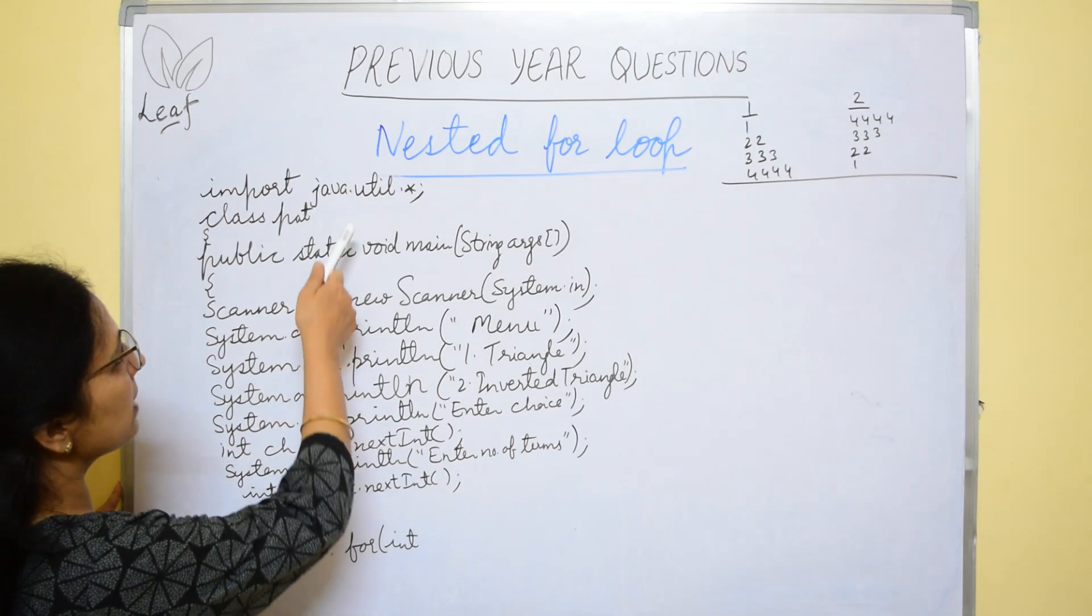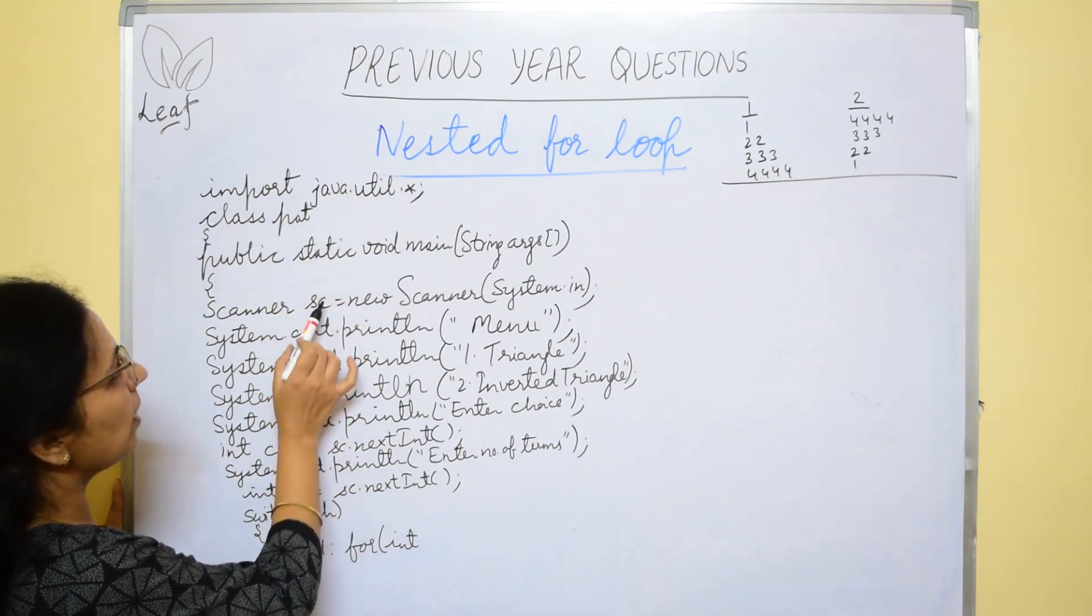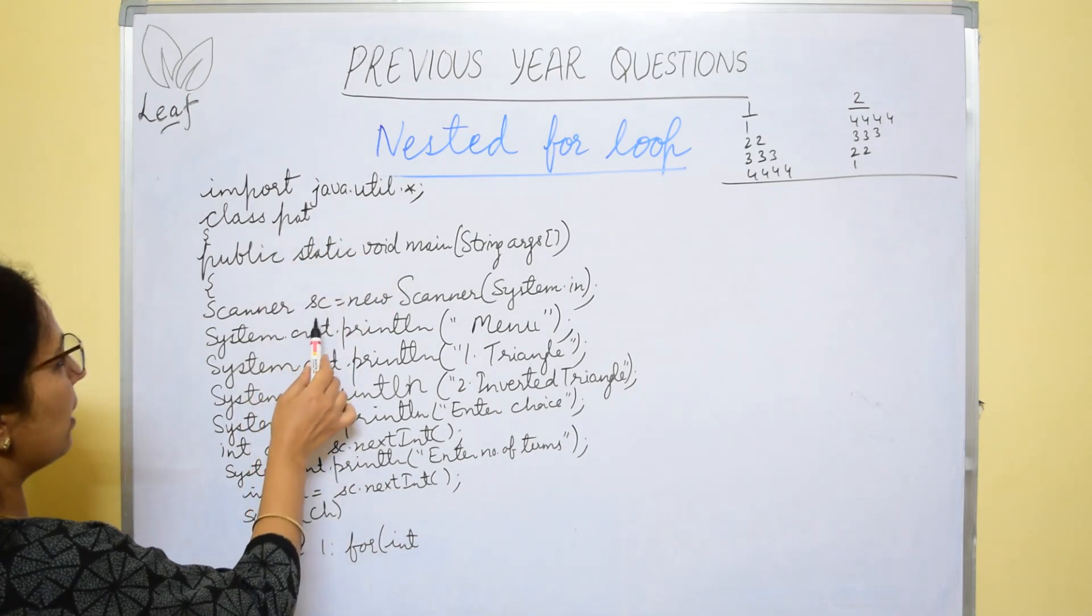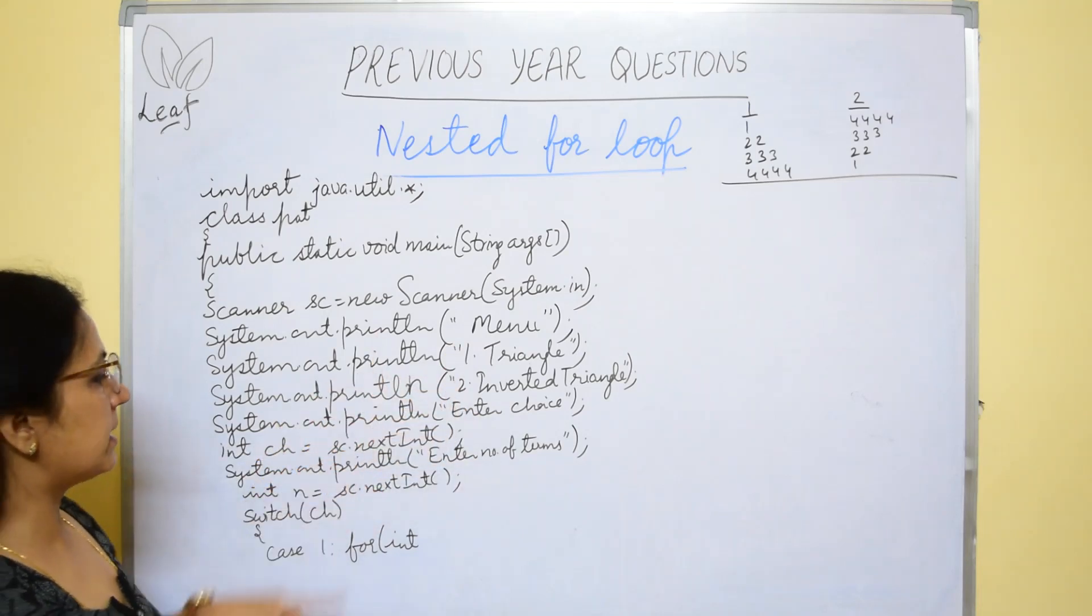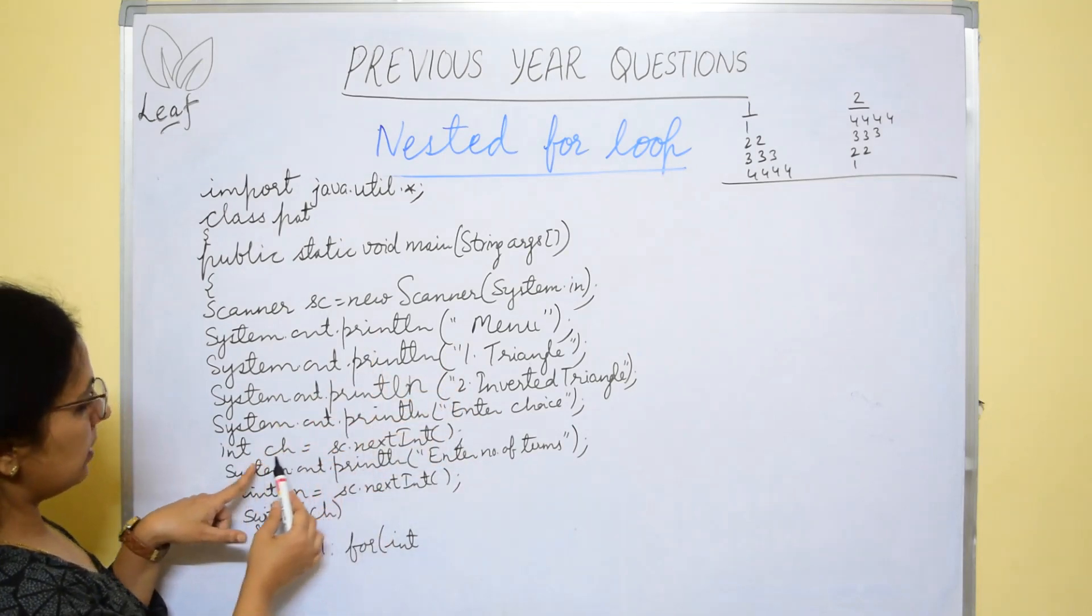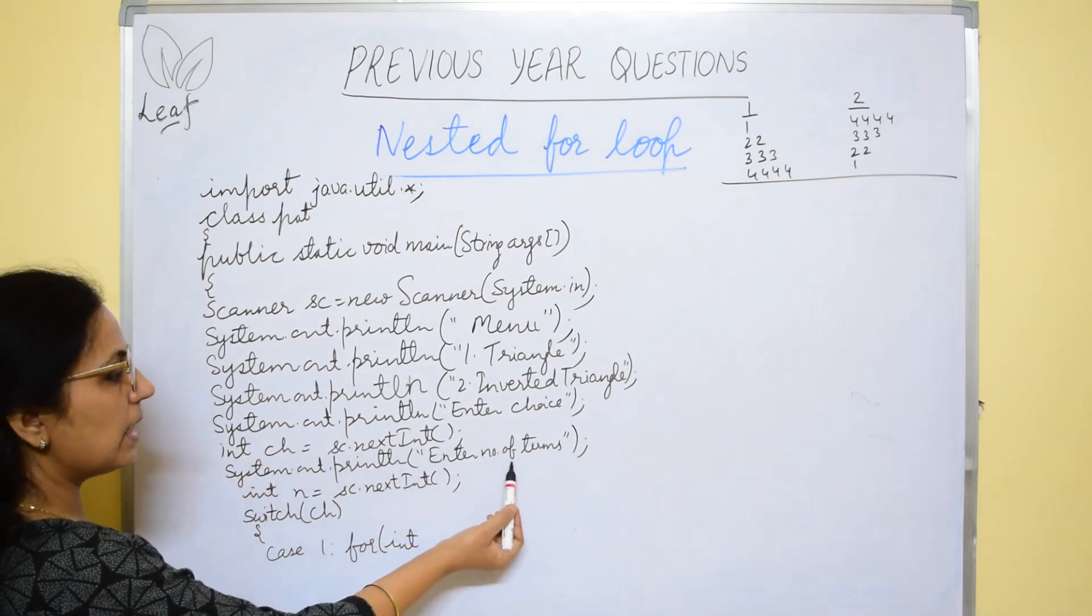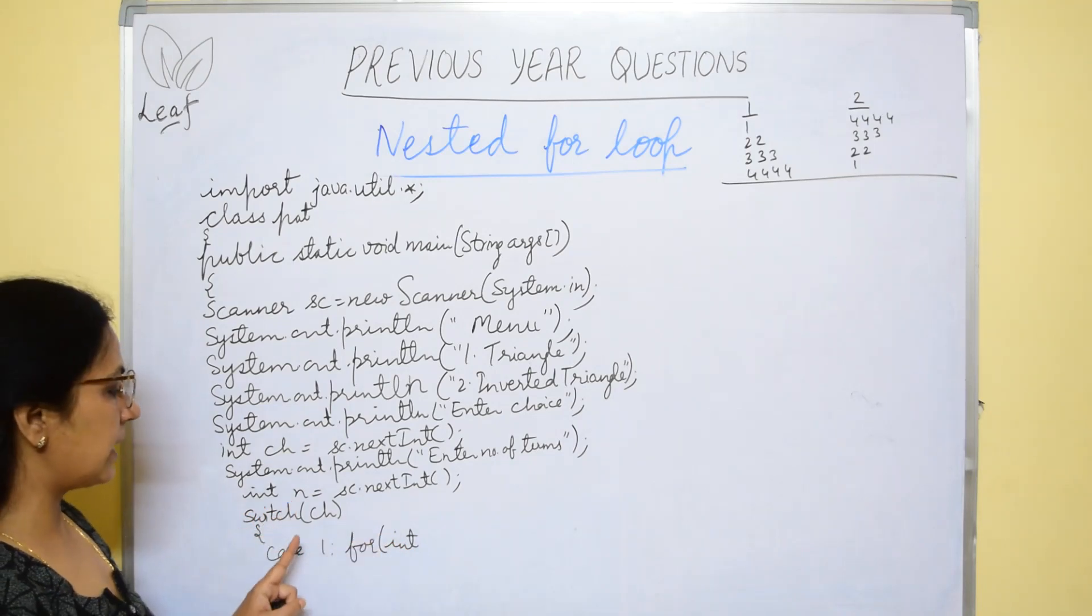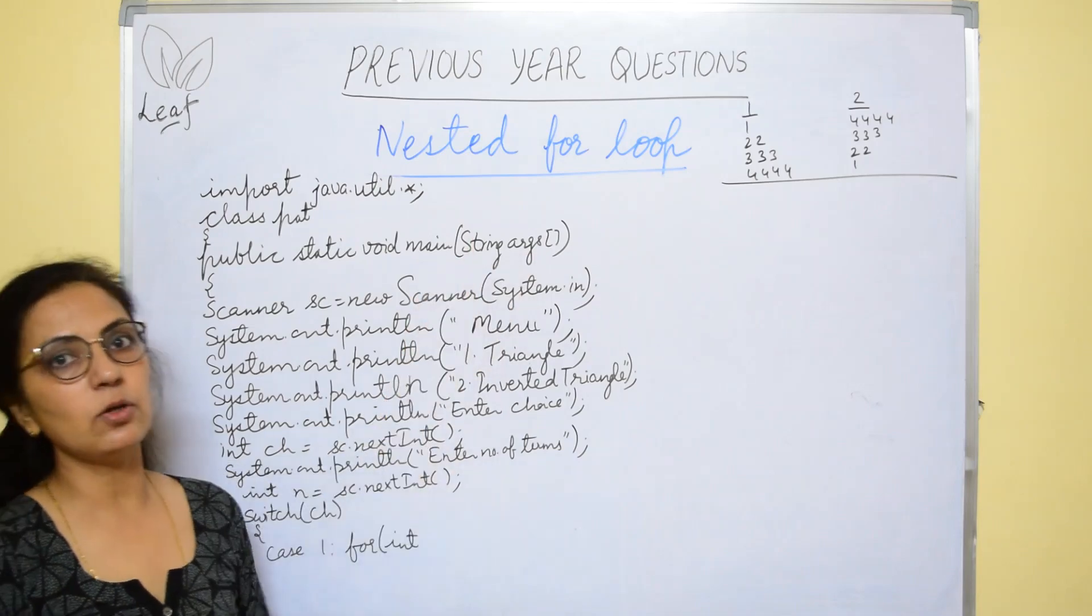Now we will do the program for this particular question. So here are the programming statements for this. Since we will be using scanner object, so import java.util, create the scanner object and then you will display the menu using print statement. Input the user's choice int ch equals to st dot next int. Then enter the number of terms in n variable n equals to st dot next int. And then we will be using switch case because it is menu driven program.